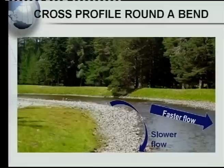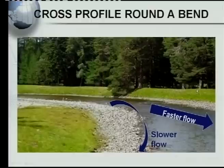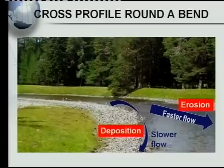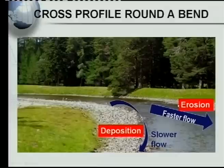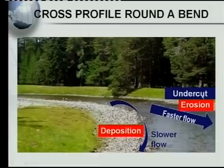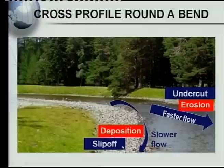When studying the cross profile around a bend, you must account for where the faster flow occurs and where the slower flow occurs. On the outer side of the bend, the water flows faster, so you find erosion. On the inner side, the water flows slower, so you find deposition — lots of stones, river sand and material deposited there. Much less deposition occurs on the outer side where flow is faster.